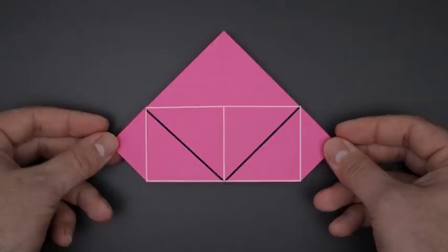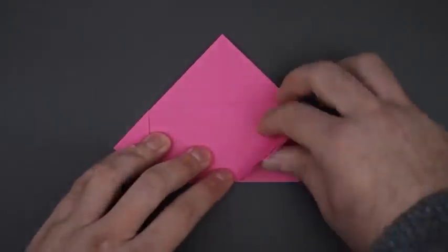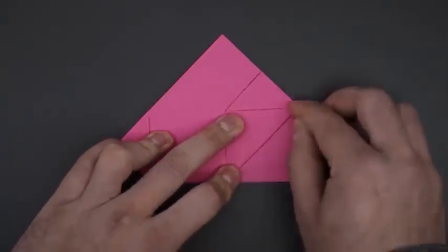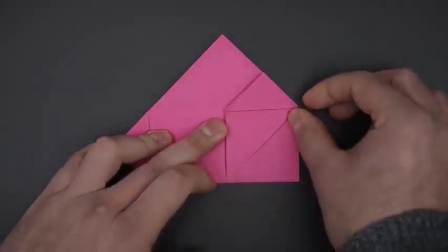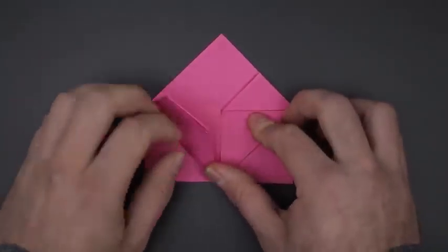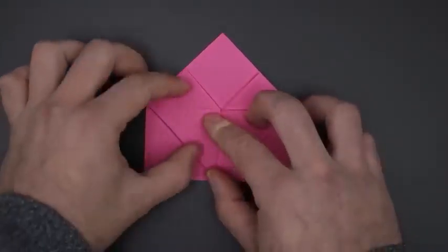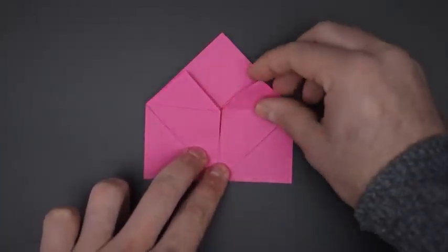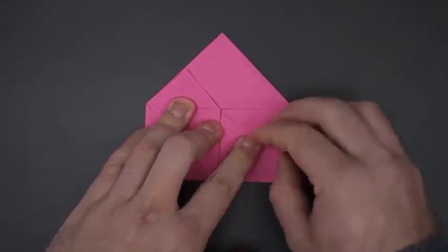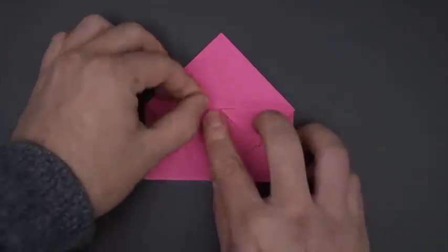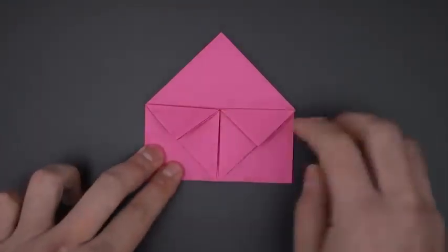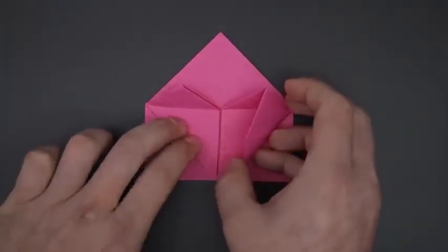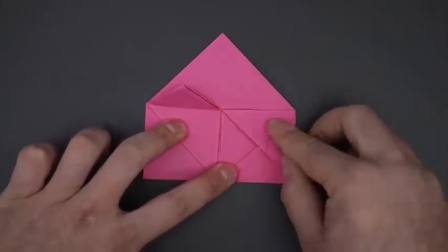First we fold the two squares. Then bring the corners down. Open and flatten.